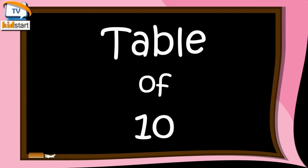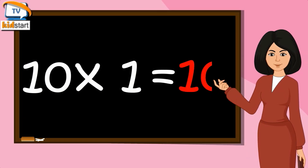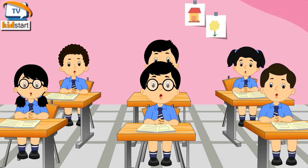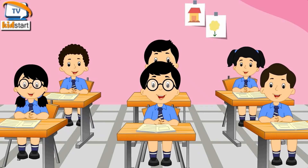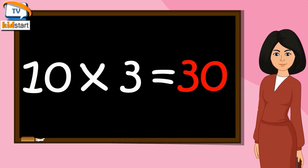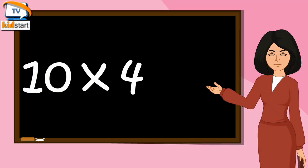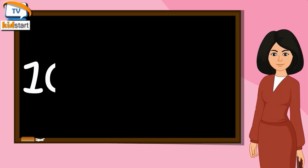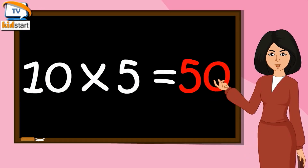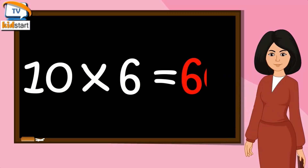Table of 10. 10 ones are 10, 10 twos are 20, 10 threes are 30, 10 fours are 40, 10 fives are 50.